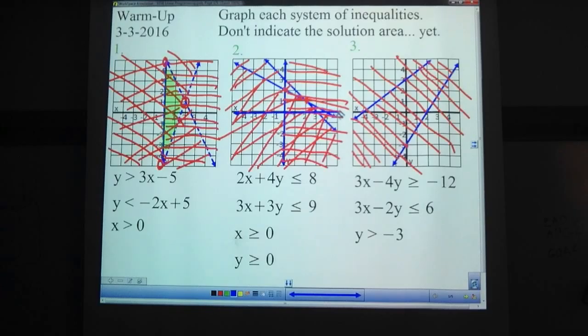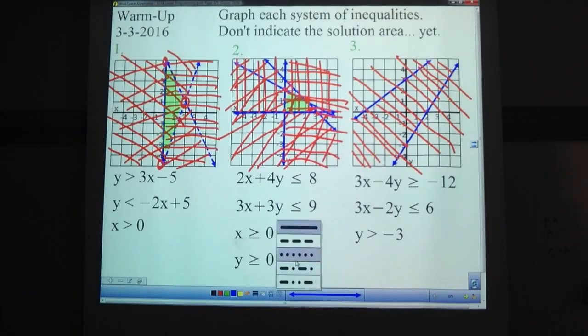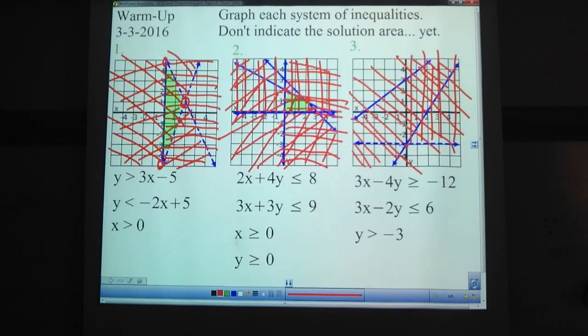y is greater than or equal to 0. So, we've got this y equals 0 is our x-axis. Greater than, that's going to be up. Up is the greater direction for y. Man, this is a mess here, isn't it? Super fun. And this little area in the middle, that is our solution. This last one here, y is greater than negative 3. So, negative 3, y is greater than negative 3, that's going to be a horizontal line here. And then, it shades upward from there. So, it's this area between the other two lines and above this line, that is our solution area. There we go.